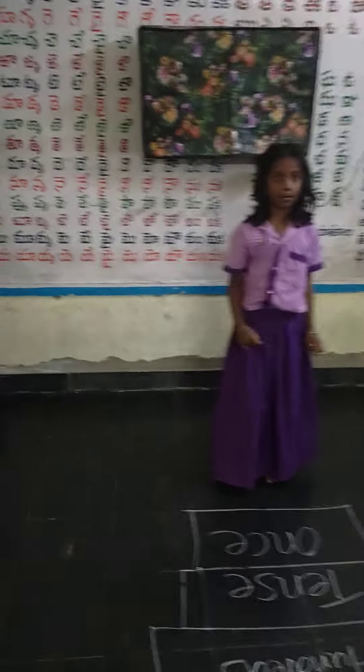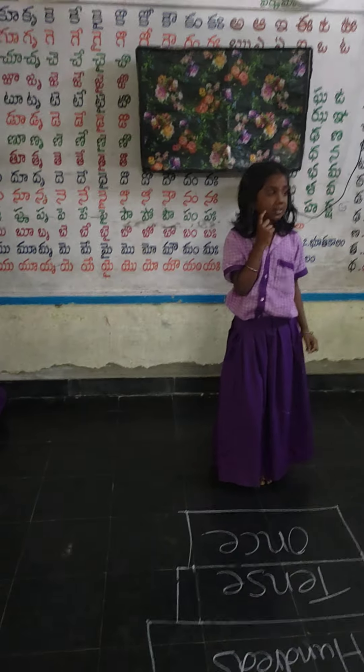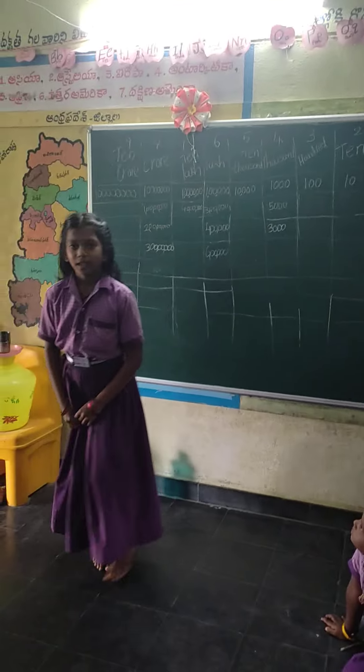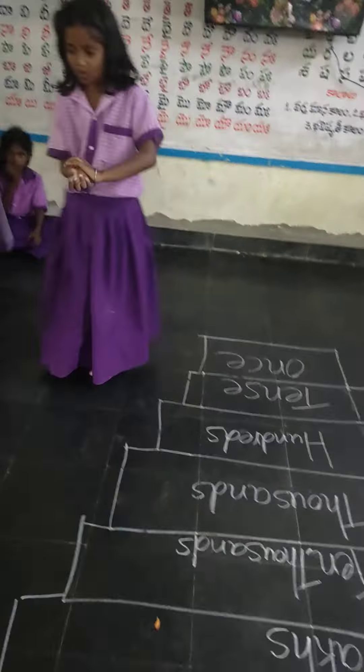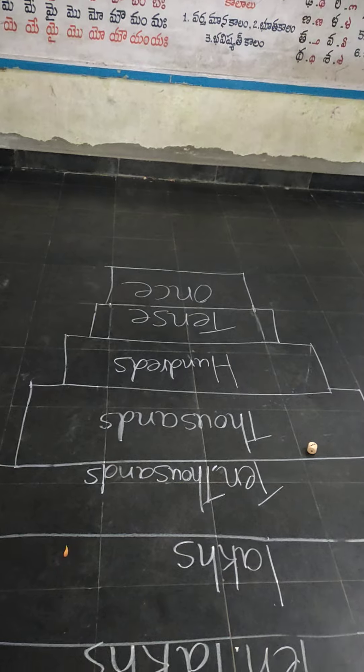How many zeros? Three zeros. Okay, next. Okay, next — Bavyya.